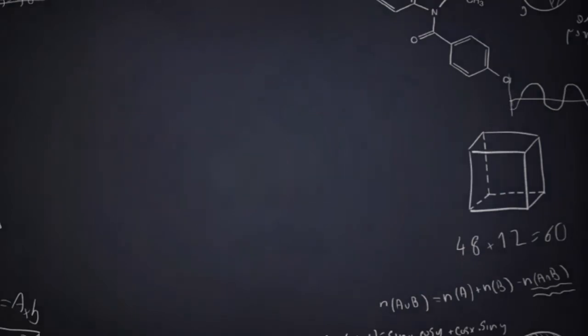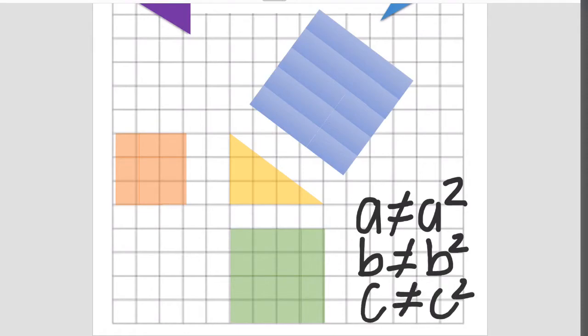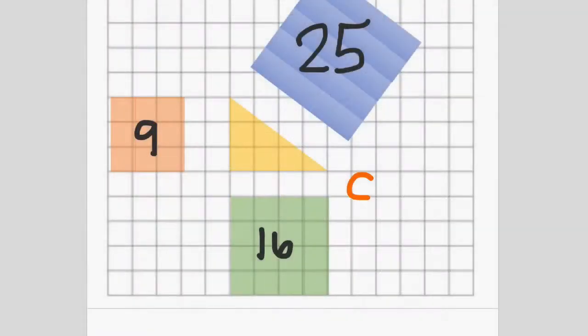Let's talk about a few misconceptions and some other helpful information. First, please never confuse A with A squared, B with B squared, and C with C squared. Those are different. Three is not nine. Four is not 16. And five is not 25. Make sure you keep those separate.